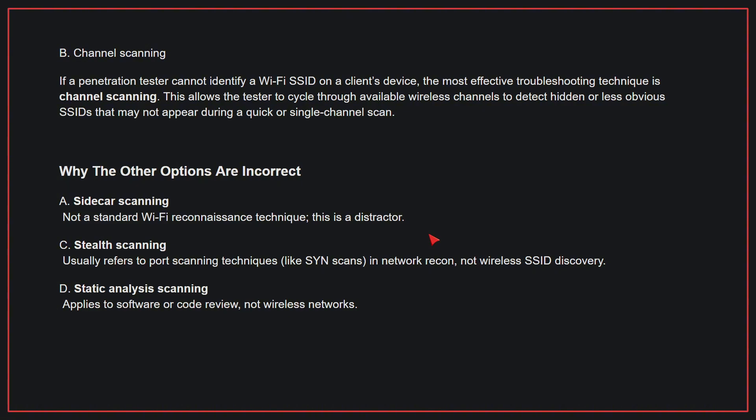Channel scanning allows the tester to cycle through available wireless channels to detect hidden or less obvious SSIDs that may not appear during a quick or single channel scan. Why the other options are incorrect: A, sidecar scanning — this is not a standard Wi-Fi reconnaissance technique and is a distractor. C, stealth scanning — this usually refers to port scanning techniques in network recon, not wireless SSID discovery. D, static analysis scanning — this applies to software or code review, not wireless networks.